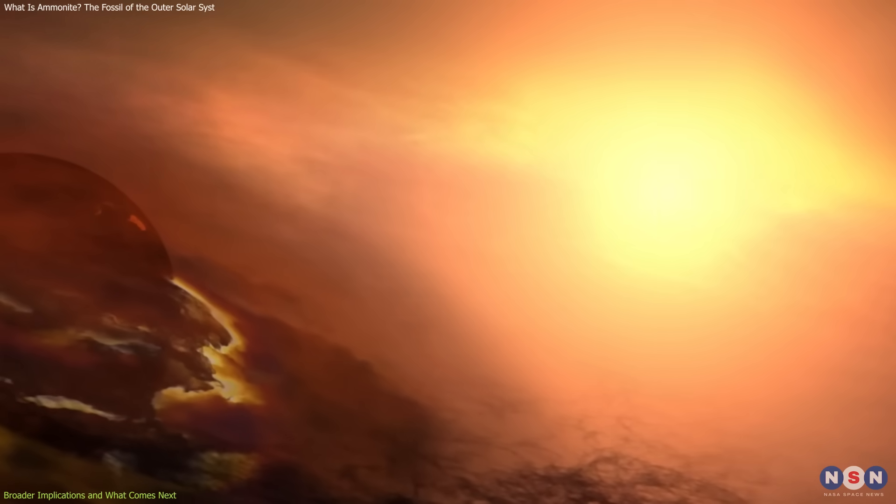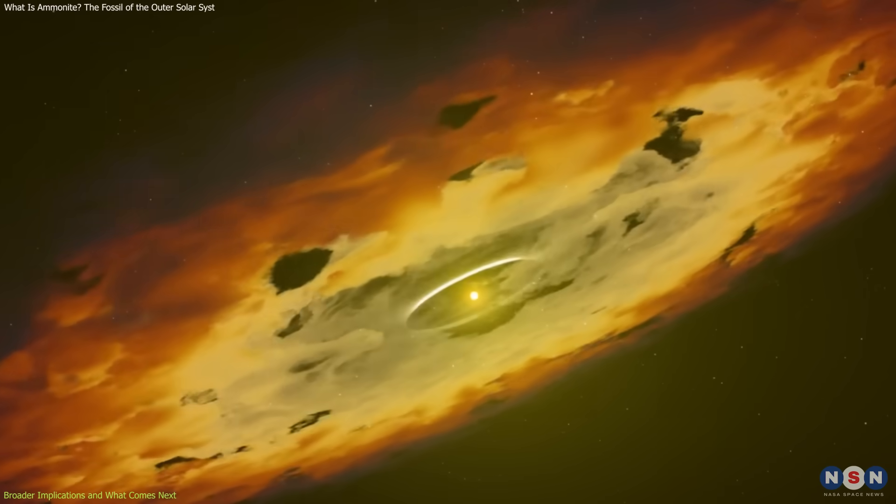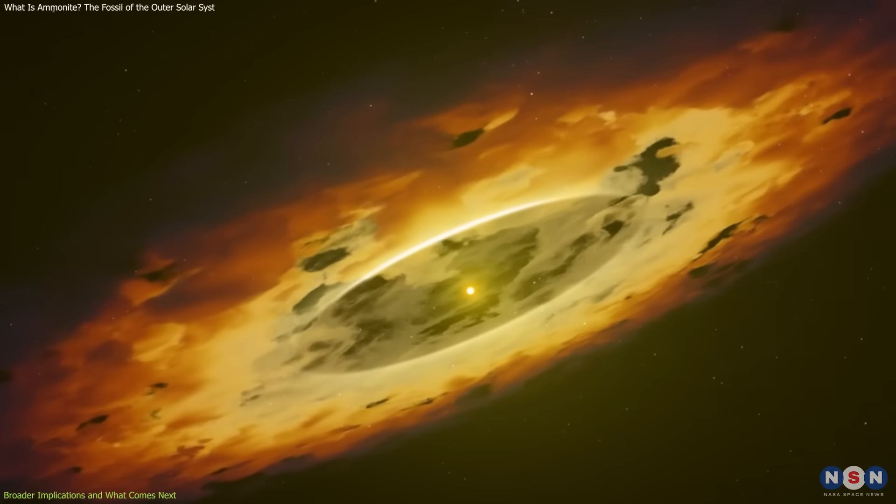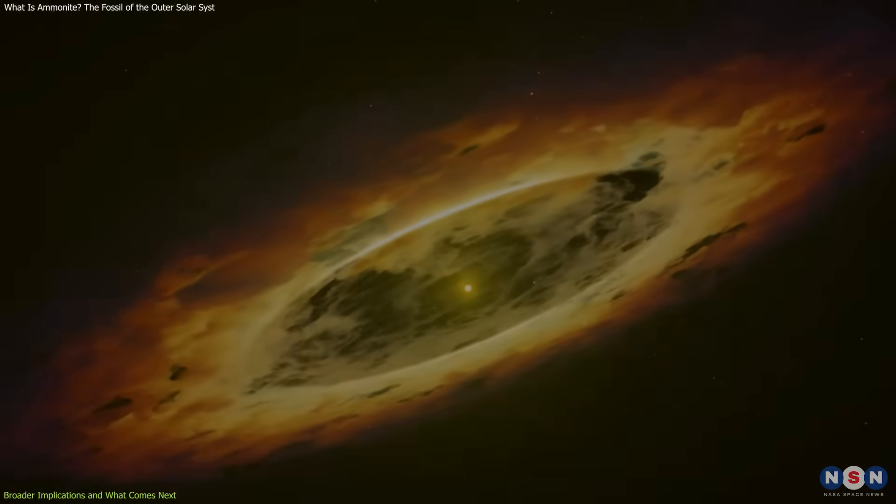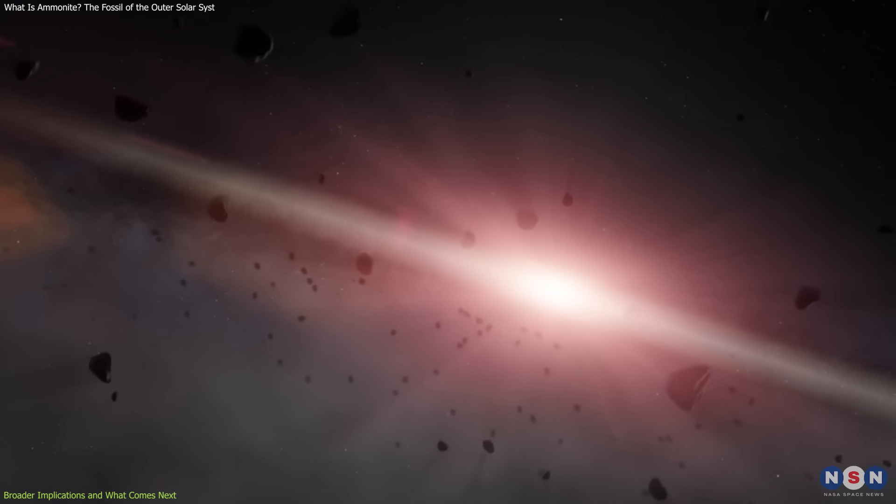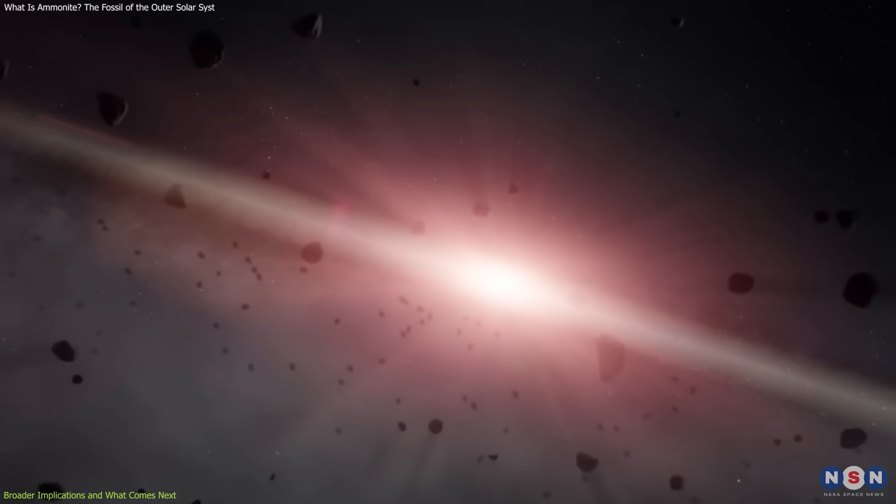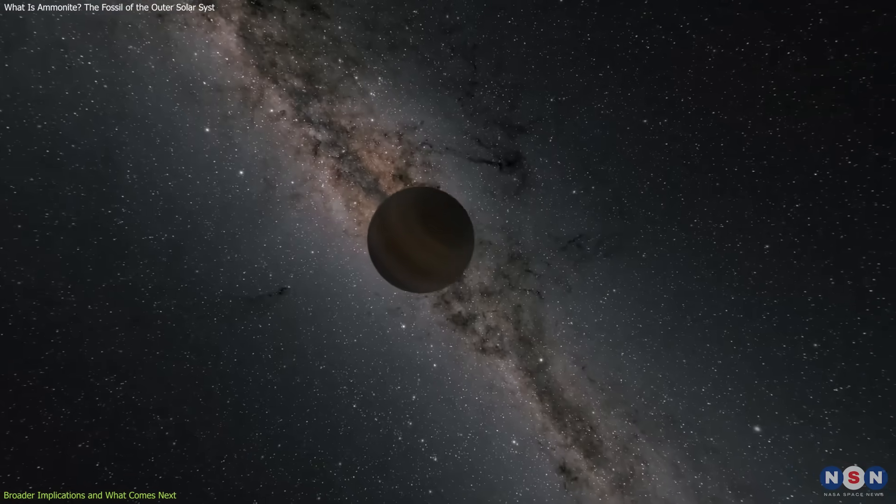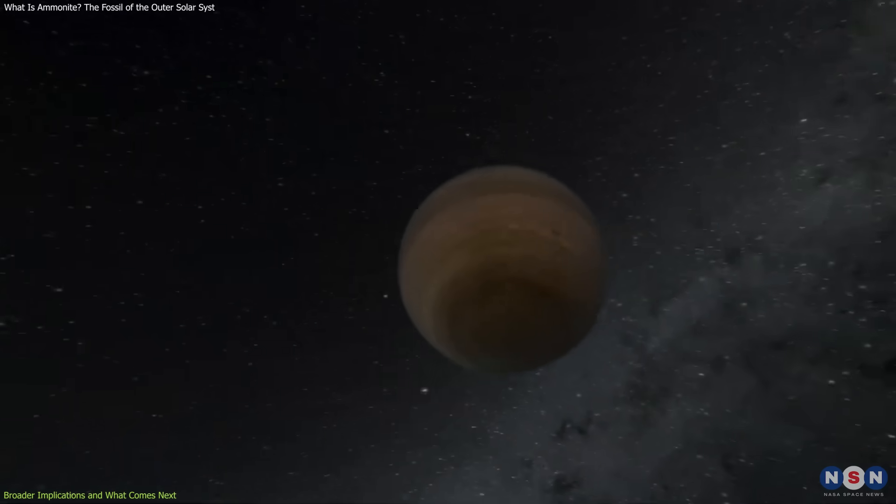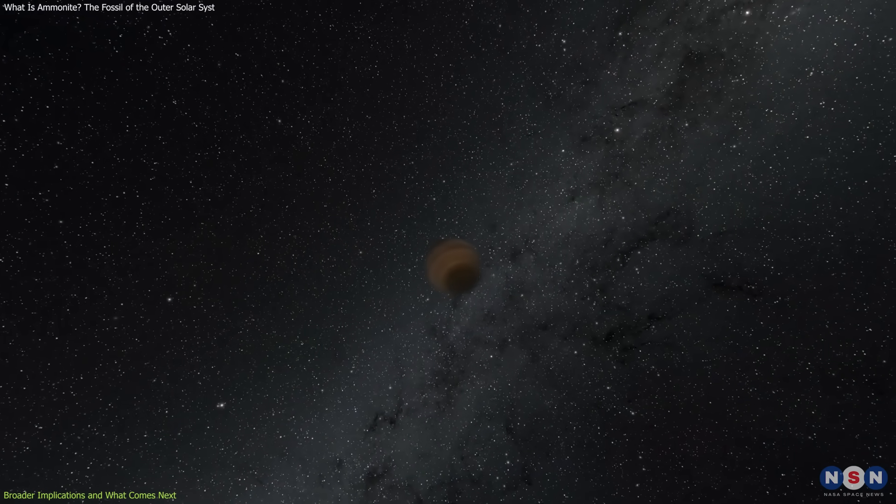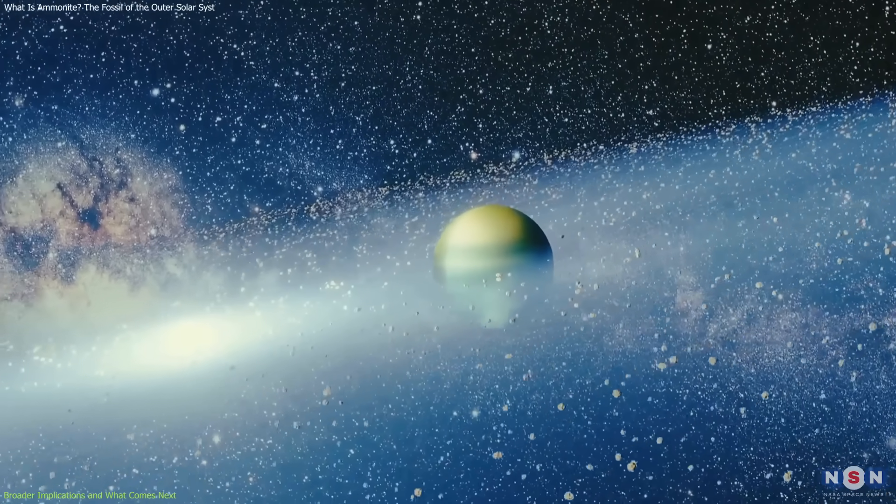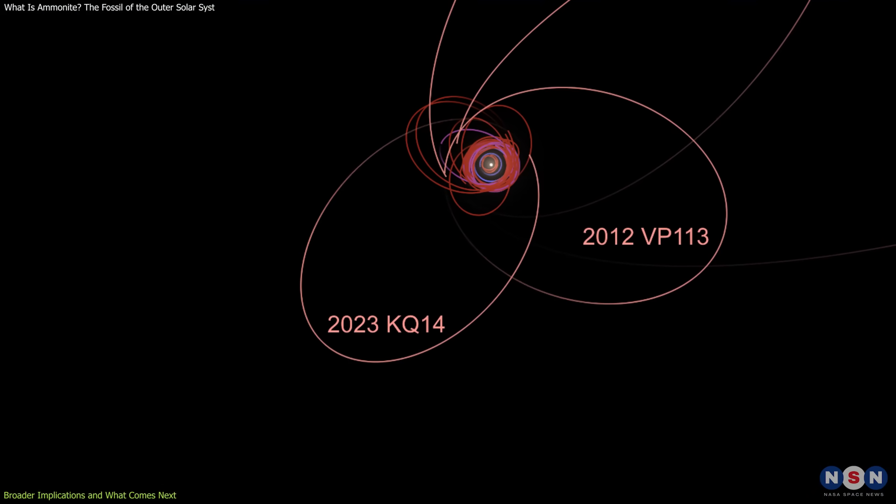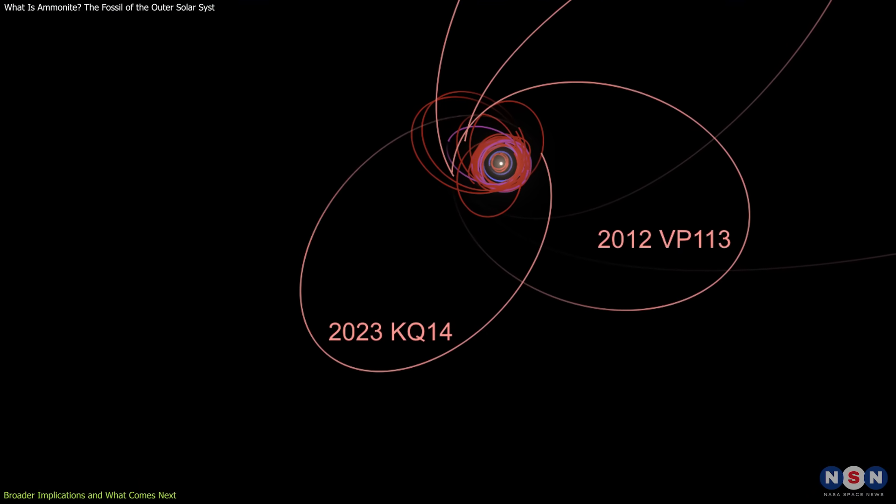A stellar flyby during the early stages of the solar system could have disturbed outer objects, stretching their orbits without requiring a Planet 9. The Sun may have captured foreign objects from nearby stars during its formation in a densely packed stellar nursery. A rogue planet, one that passed through or originated in our system, may have shaped these orbits before being ejected.